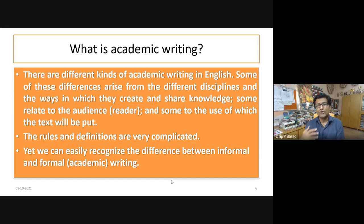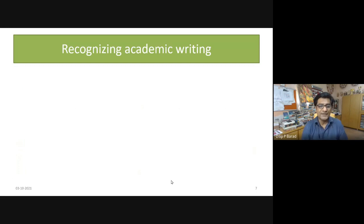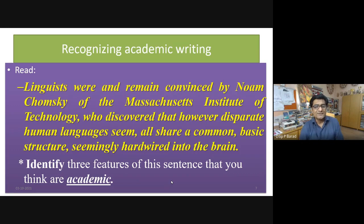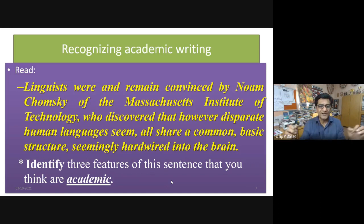Academic writing keeps changing its definition, characteristics, and nature accordingly — the rules are equally complicated. Many people say you should write in a particular way, and many do not agree — we will face this in a small activity. Yet we can easily recognize the difference between informal and formal writing. Let us try to recognize academic writing through examples, since examples are the best form to help us identify these characteristics.